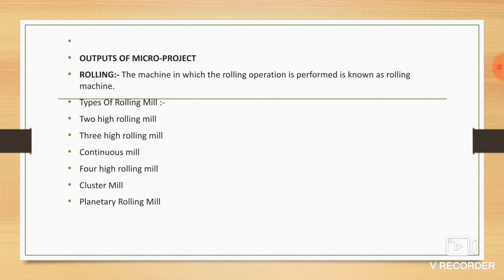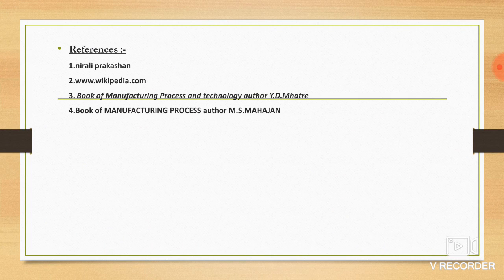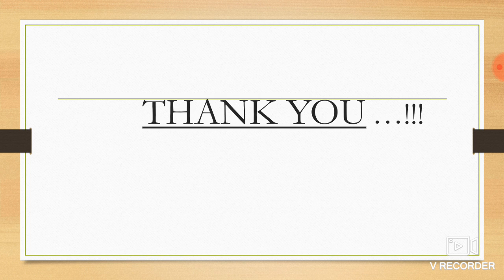Outputs of micro project: rolling, the machine in which the rolling operation is performed is known as a rolling machine. Types of rolling mill: two high rolling mill, three high rolling mill, continuous mill, four high rolling mill, cluster mill. Reference: www.wikipedia.com. Thank you friends.